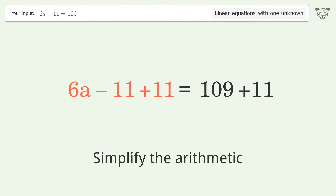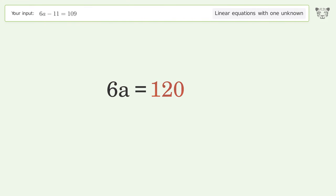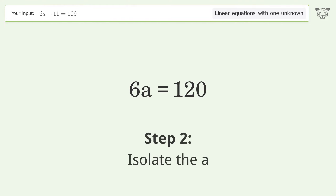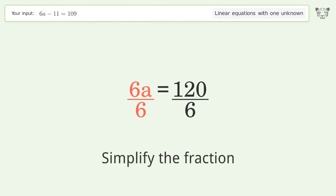Simplify the arithmetic. Isolate the A. Divide both sides by 6. Simplify the fraction.